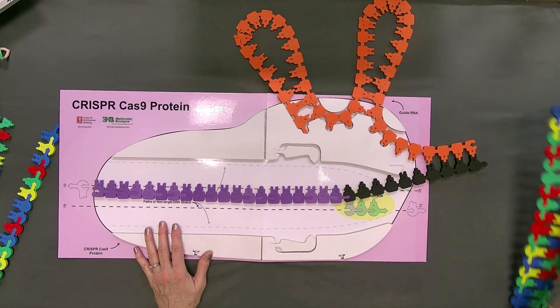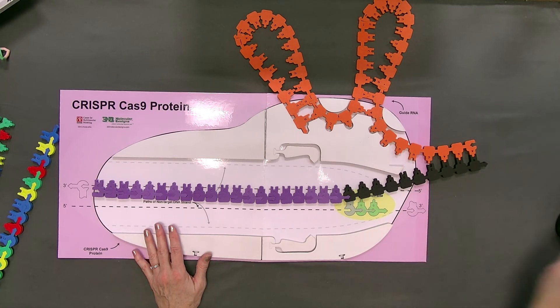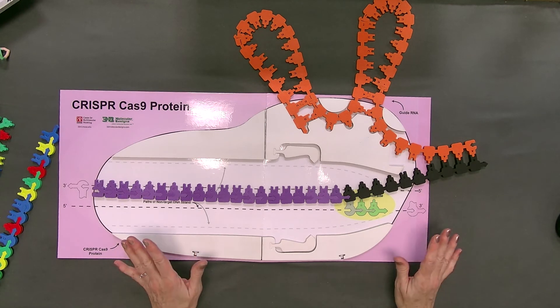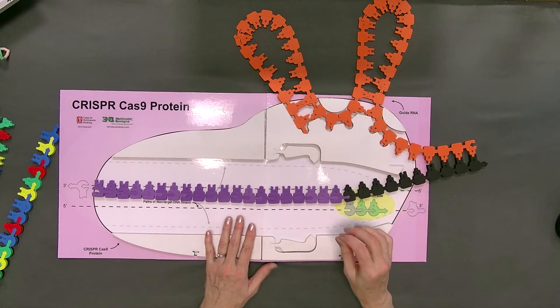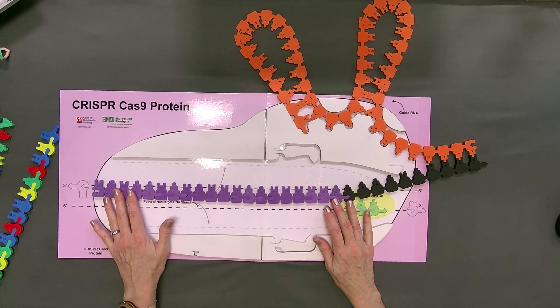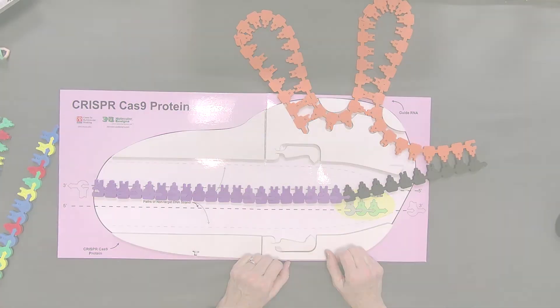So that is the basic idea of how Cas9 uses this guide RNA system to find a specific sequence and then cut it. Hopefully that makes sense to you. This is something you may have to discuss for a while and keep working with the models because they will help you—they'll help it click.